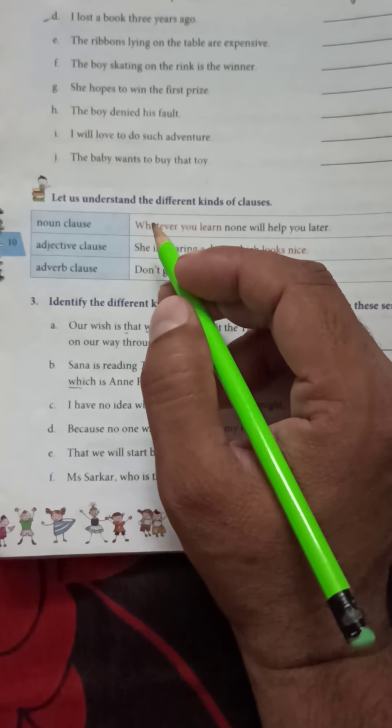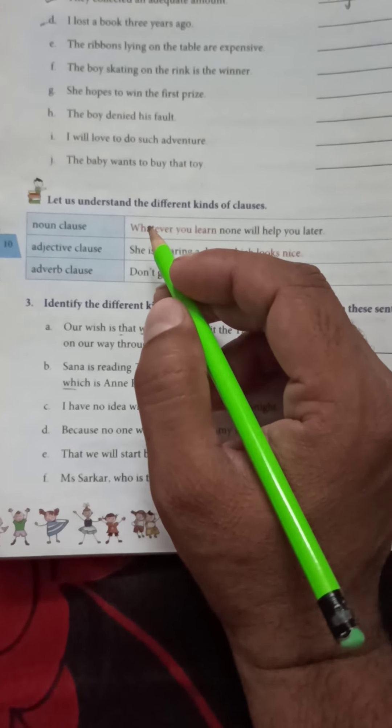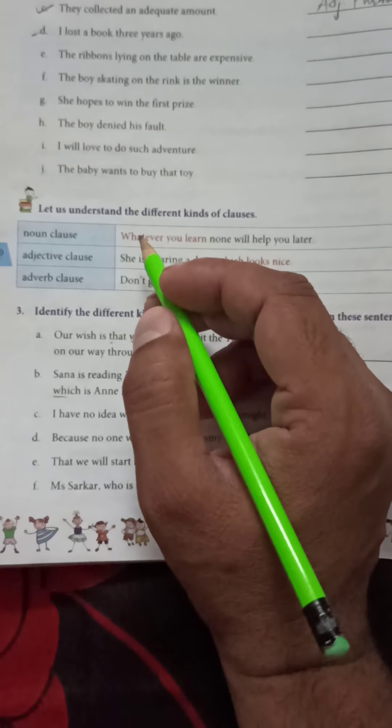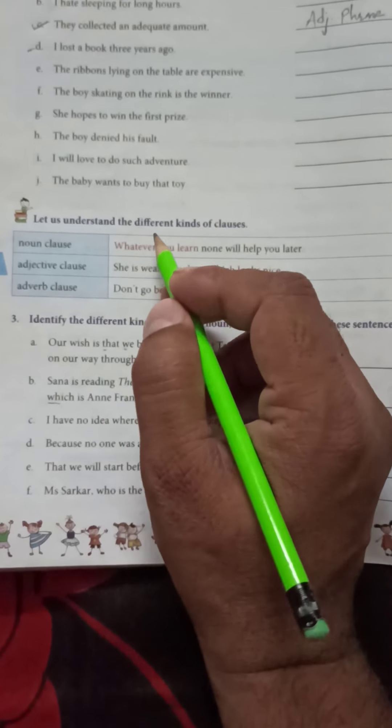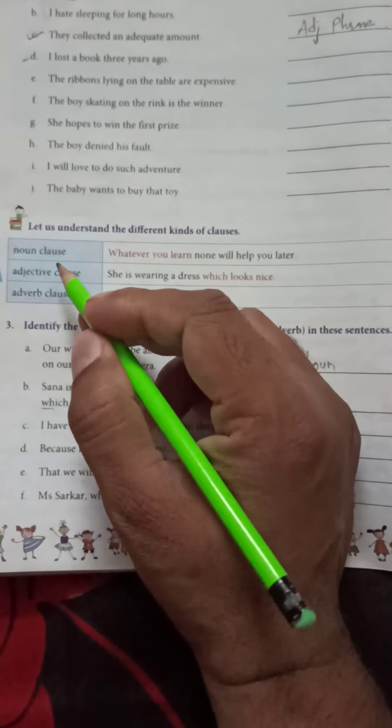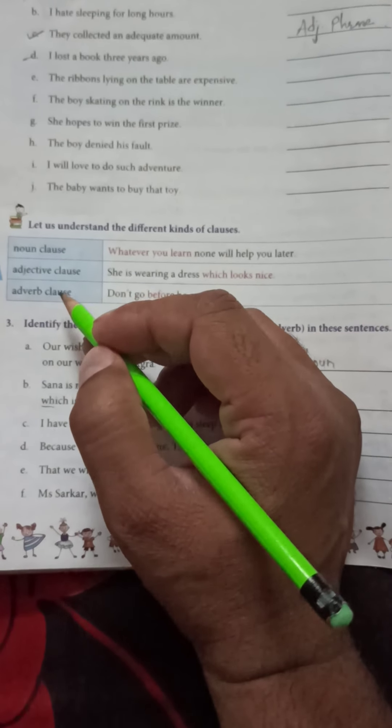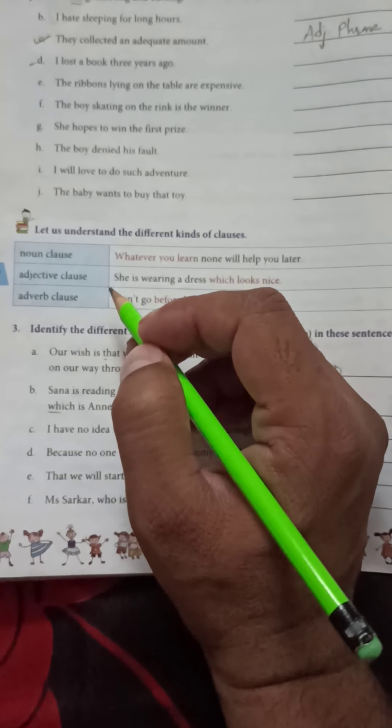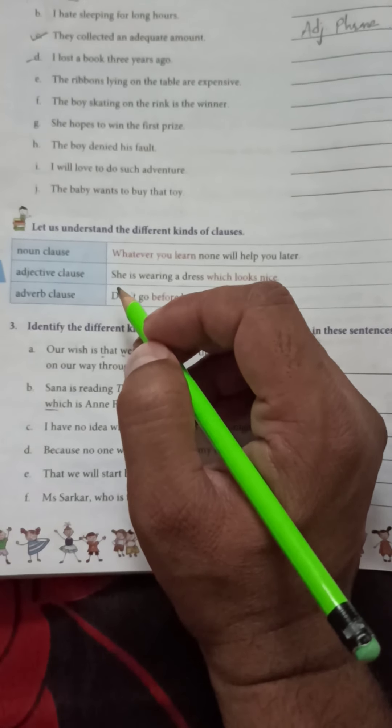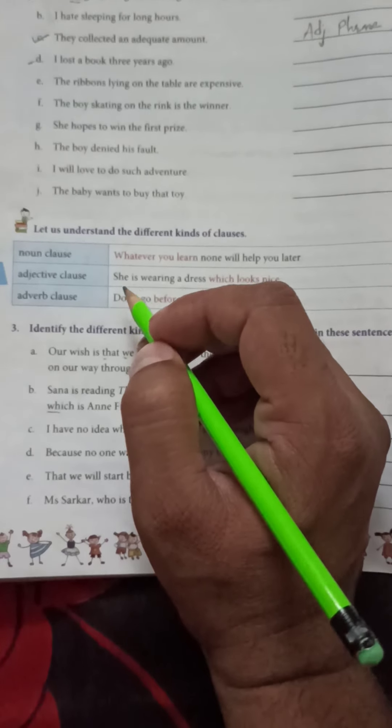Hello students, today I will explain different kinds of clauses. Let us understand the different kinds of clauses: noun clause, adjective clause, and adverb clause. So firstly, what is clause? In my previous video I explained the clause, so firstly I will repeat it.